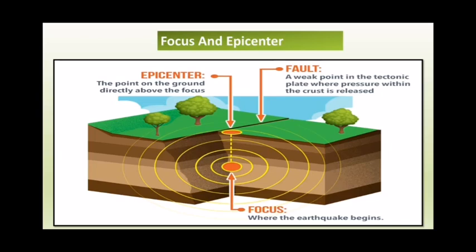Because of the movements occurring below the earth's surface, tension is created and keeps on accumulating. High energy is released at the place where this tension mounts up — this is the center of the earthquake, called the focus or hypocenter. Energy waves scatter in all directions from this center. The place on the earth's surface where these energy waves reach first is called the epicenter of the earthquake. It is the nearest place on the earth's surface from the focus, experiences the first tremor, and is perpendicular to the focus.